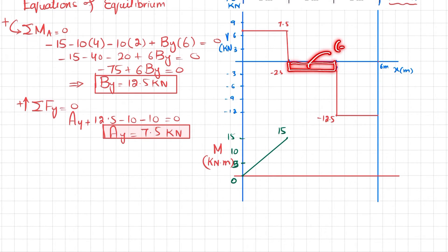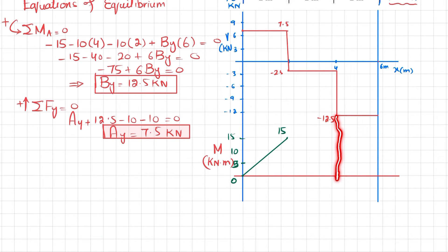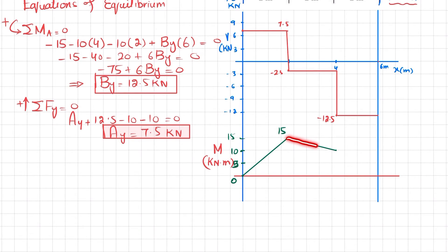The second area is also rectangular: minus 2.5 into 2 meters equals minus 5 kN·m. So 15 plus (minus 5) equals 10 kN·m at the next point. The slope will be decreasing because the shear force area is negative. Since the shear force is a horizontal line at zero degrees, the bending moment equation is one degree higher — a straight line with decreasing slope.